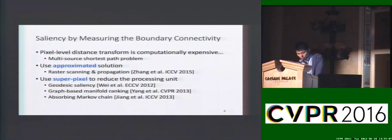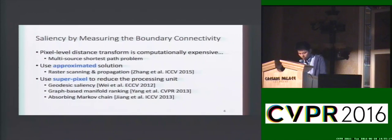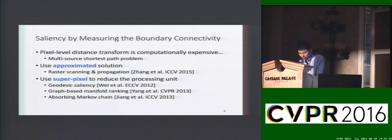A naive way is to compute the shortest path distance from each pixel to image boundaries. However, the processing time might be unacceptably long for saliency detection. Some works seek approximative solutions, and many others use superpixel segmentation to reduce the processing units. However, superpixel segmentation usually becomes a bottleneck and prevents these methods from real-time applications.